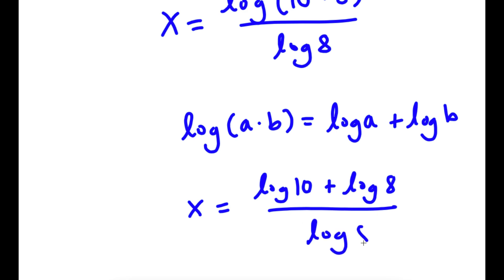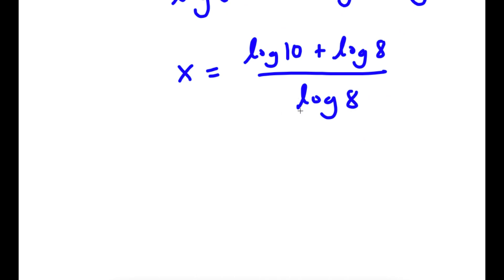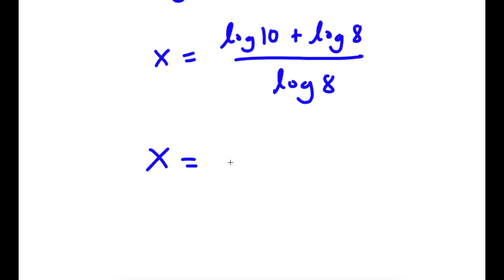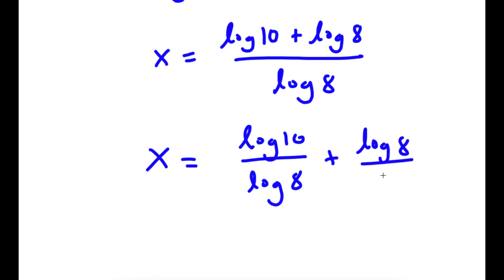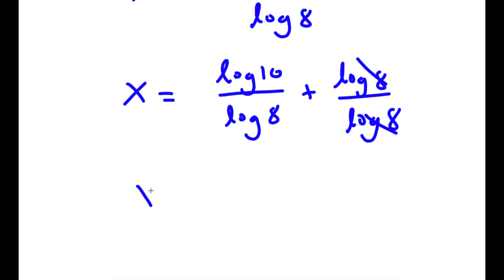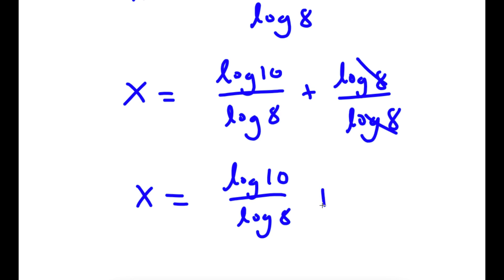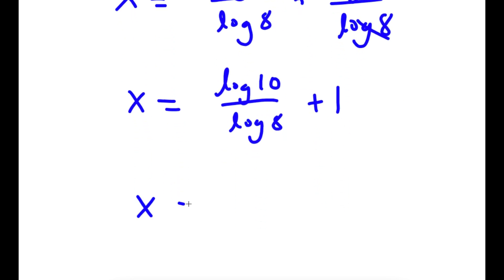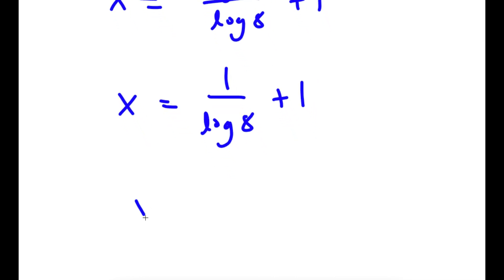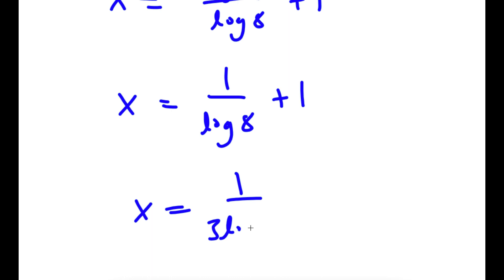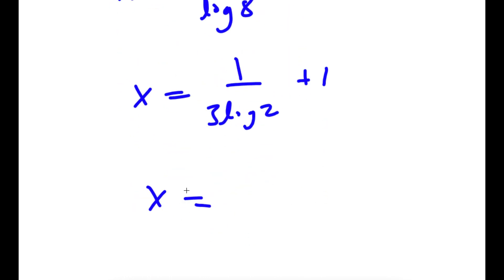And now I have this over log 8. So I'm going to rewrite this as log 10 over log 8 plus log 8 over log 8. Anything divided by itself is 1, so log 8 over log 8 cancels out. Now I have log 10 over log 8 plus 1. And log 10 is also 1, so I have x is equal to 1 over log 8 plus 1. Now log 8 is the same as 3 times log 2, which equals approximately 2.1074.